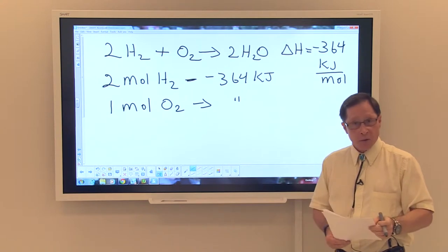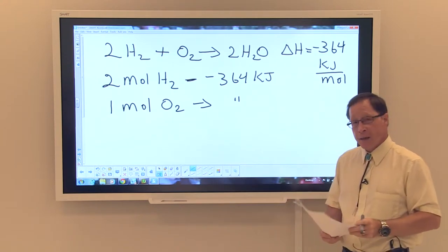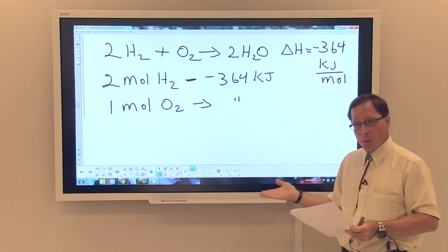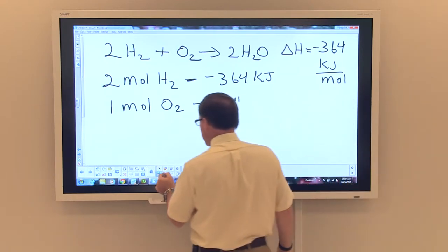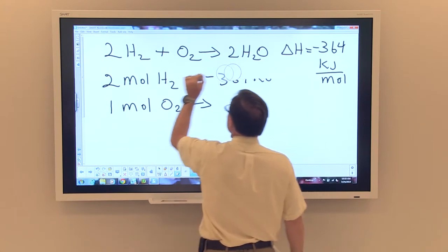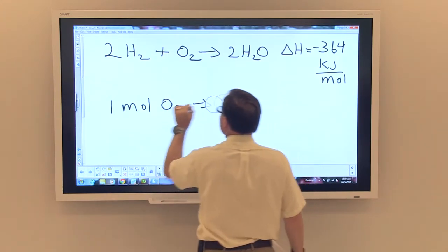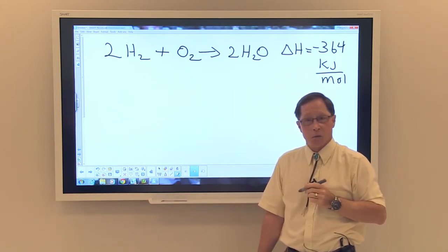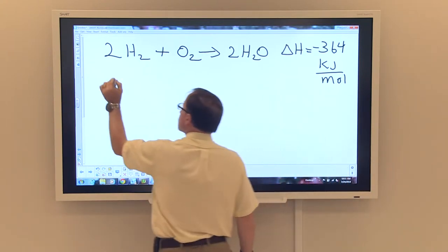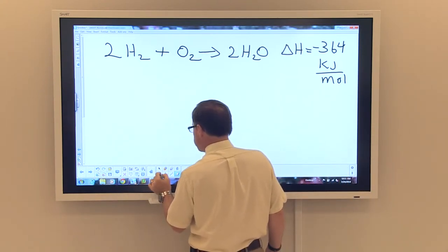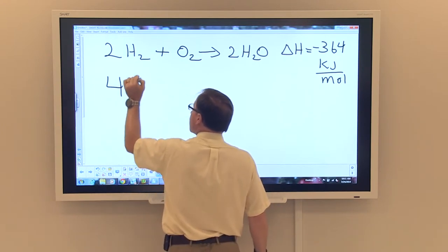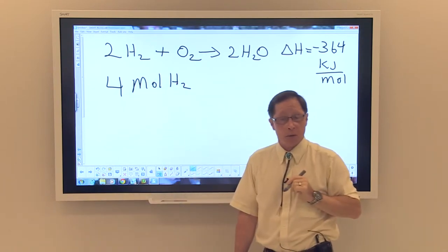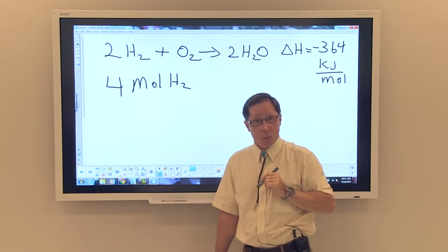And so we can ask ourselves this question: What if we didn't have the same ratios here of these materials? How would that affect the amount of energy that we would get from this reaction? Suppose I told you that we didn't have just two moles of hydrogen, but rather we have four moles of hydrogen.